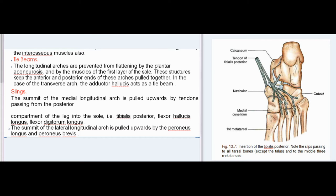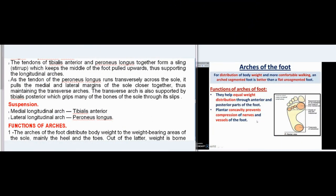The summit of the lateral longitudinal arch is pulled upwards by the peroneus longus and peroneus brevis. The tendons of tibialis anterior and peroneus longus together form a sling which keeps the middle of the foot pulled upwards, thus supporting the longitudinal arches. As the tendon of the peroneus longus runs transversely across the sole, it pulls the medial and lateral margins of the sole closer together, thus maintaining the transverse arches. The transverse arch is also supported by tibialis posterior, which grips many of the bones of the sole through its slips. Suspension: medial longitudinal arch — tibialis anterior; lateral longitudinal arch — peroneus longus.